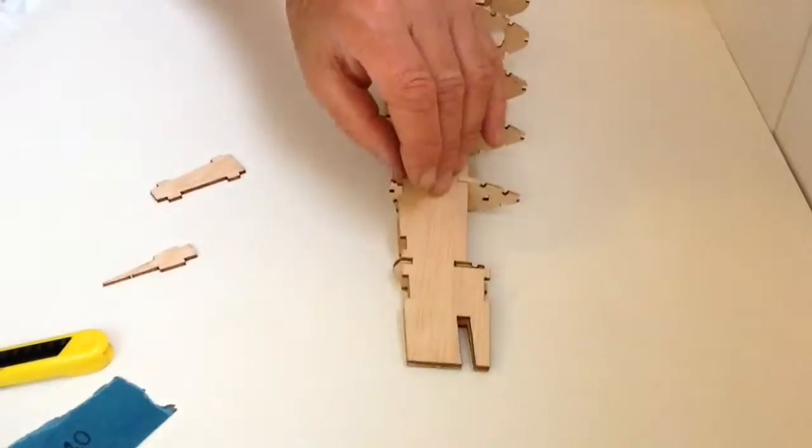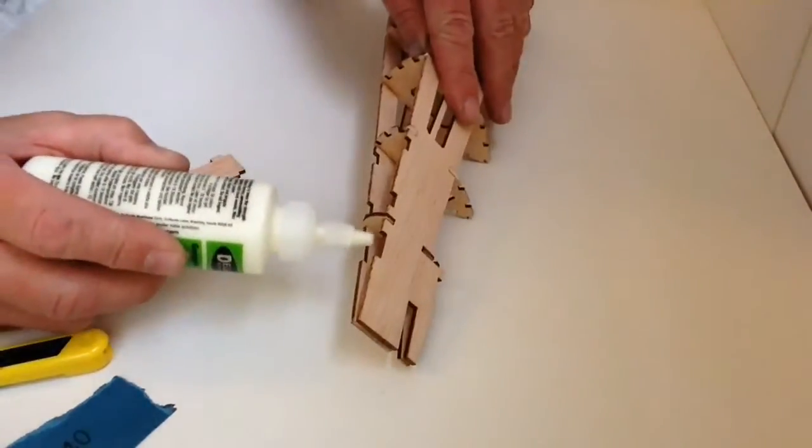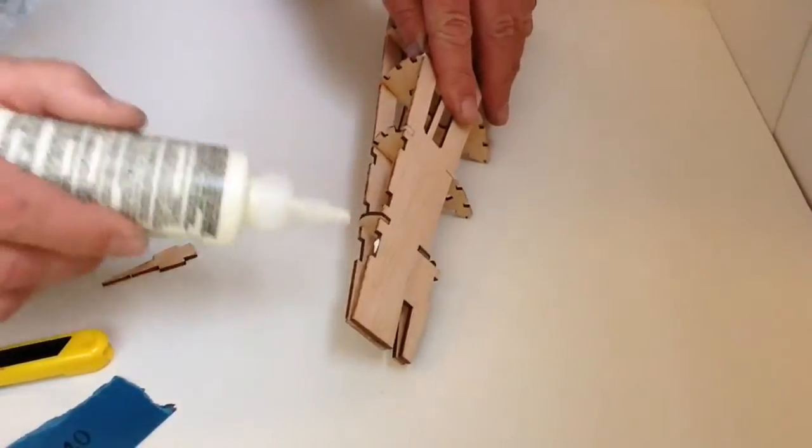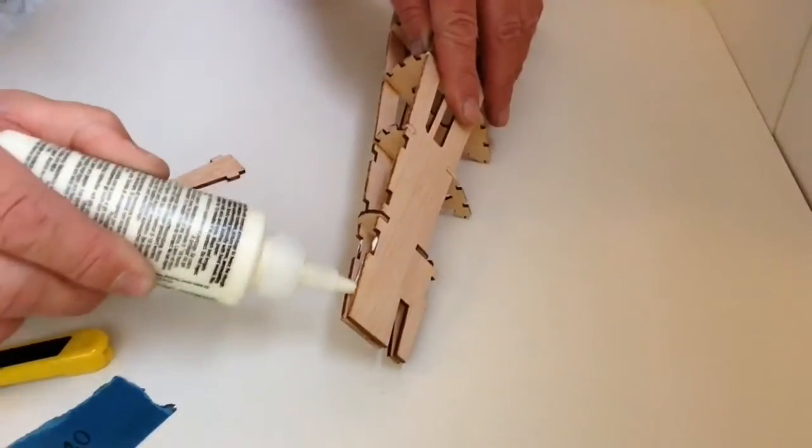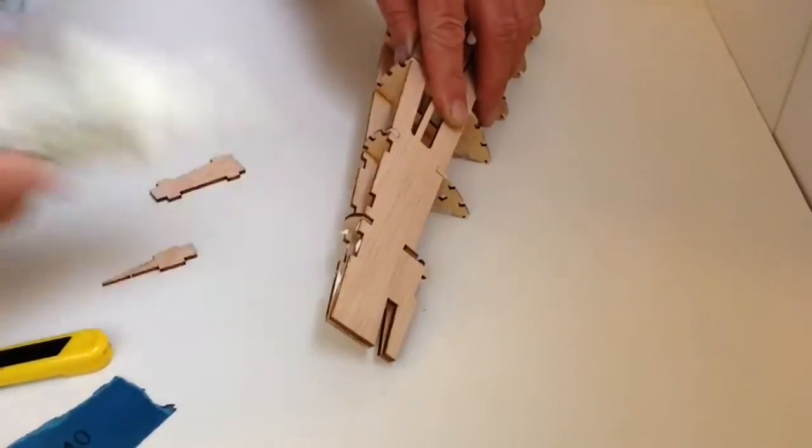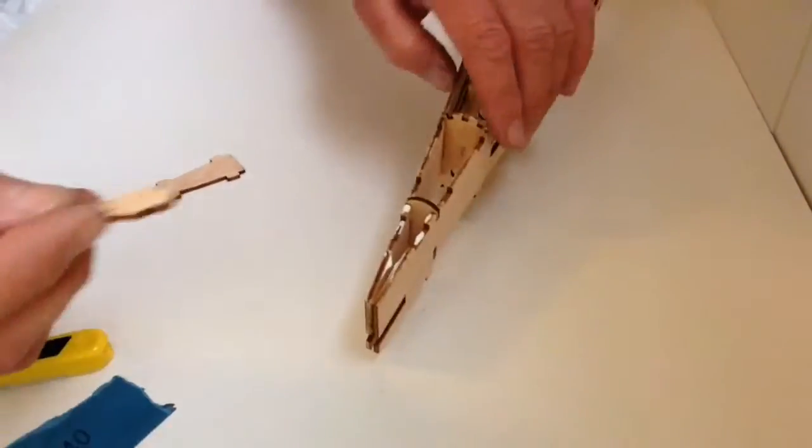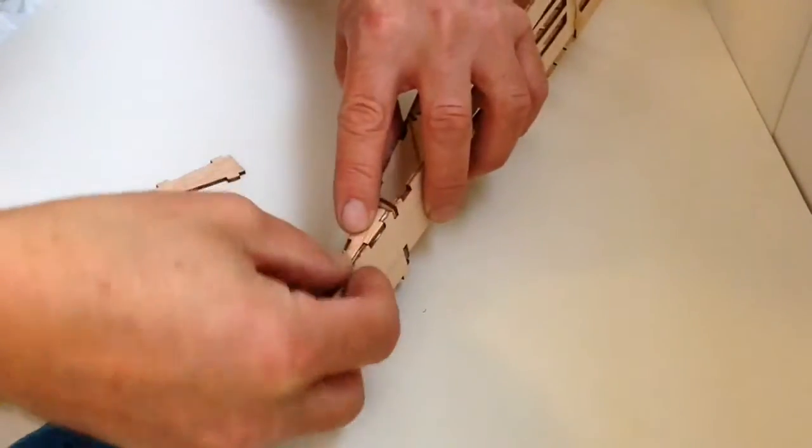So get your glue ready and apply a little glue here and a little glue here and just some on the inside here and here. Take the section and pop that in there.